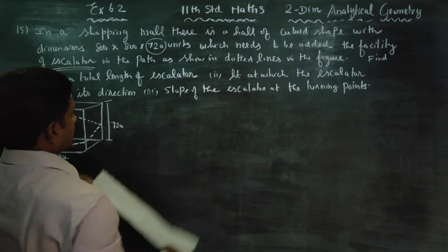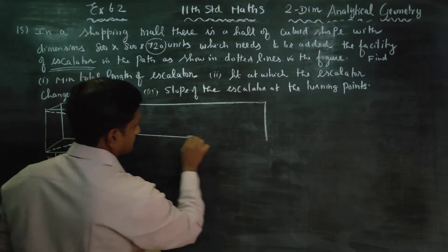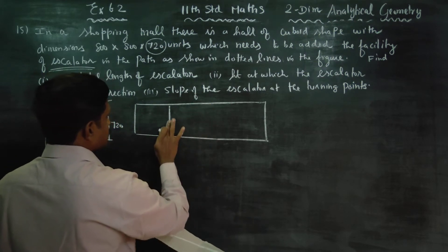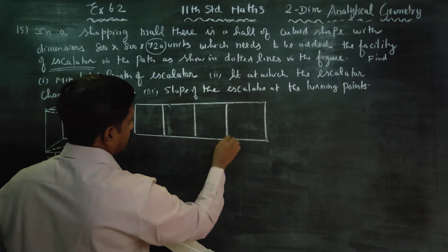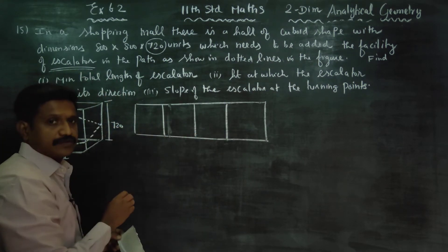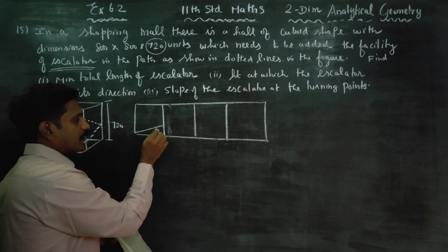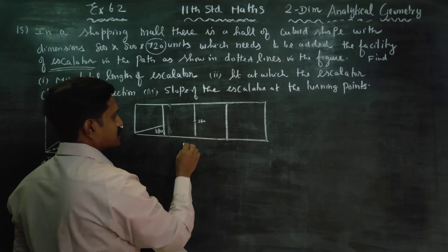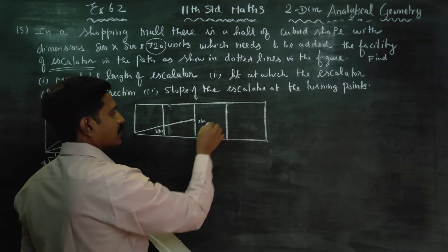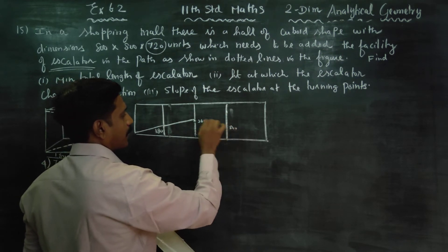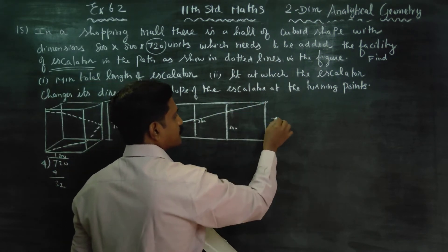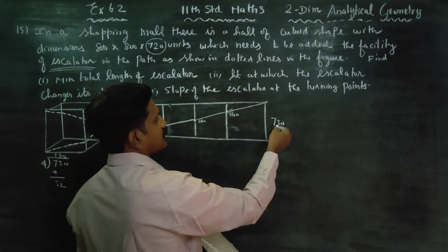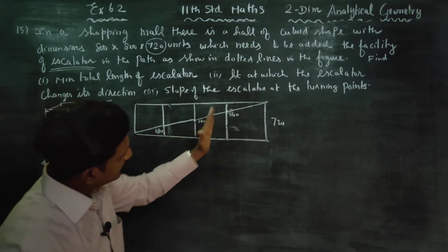I will show you a diagram of the wall. In the first wall, the height is 180. 180 is here, 180 is here giving 360, then 180 more gives 540. With one more 180 you reach 720. So 180+180=360, 360+180=540, 540+180=720.